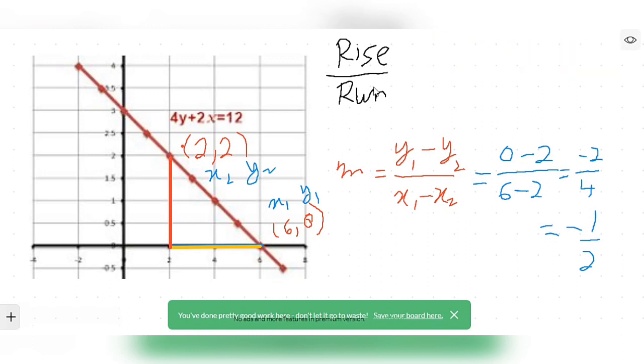So the first method of the gradient is rise over run. To find the rise over run we just select any two points on this straight line. I selected this point first here.